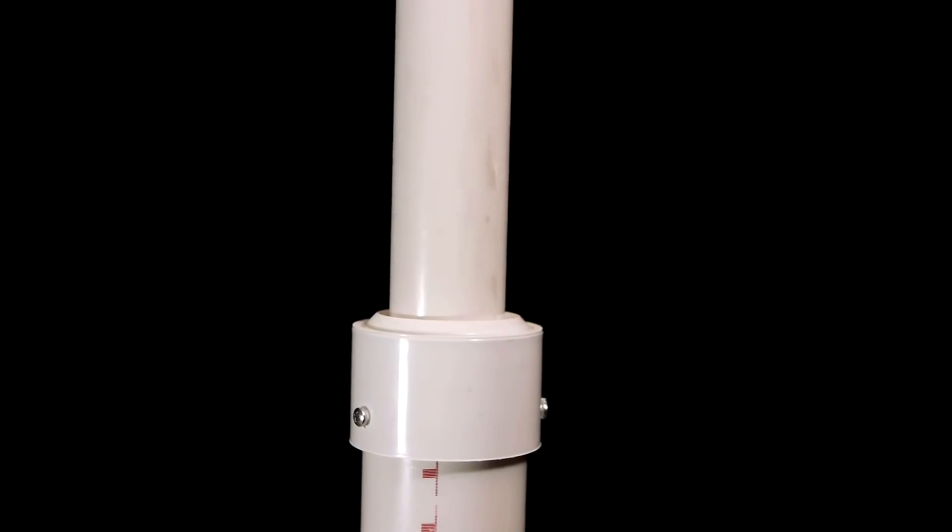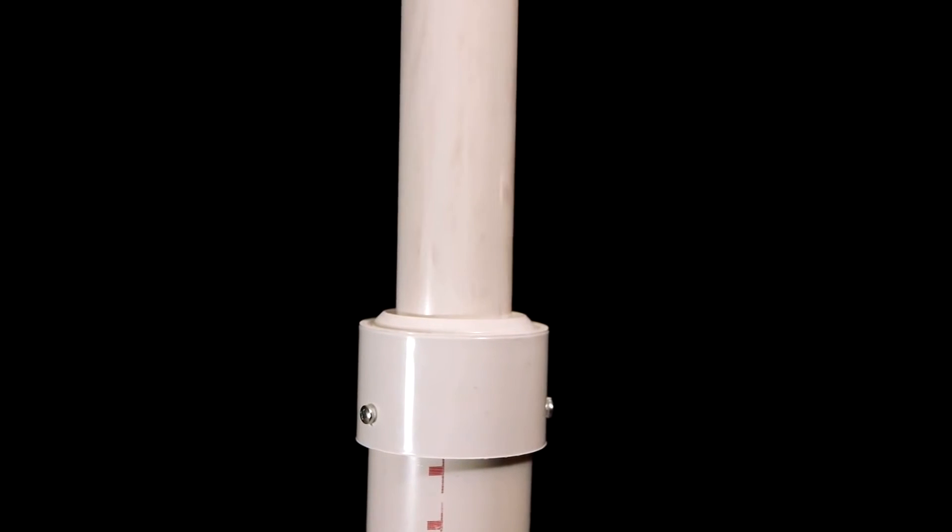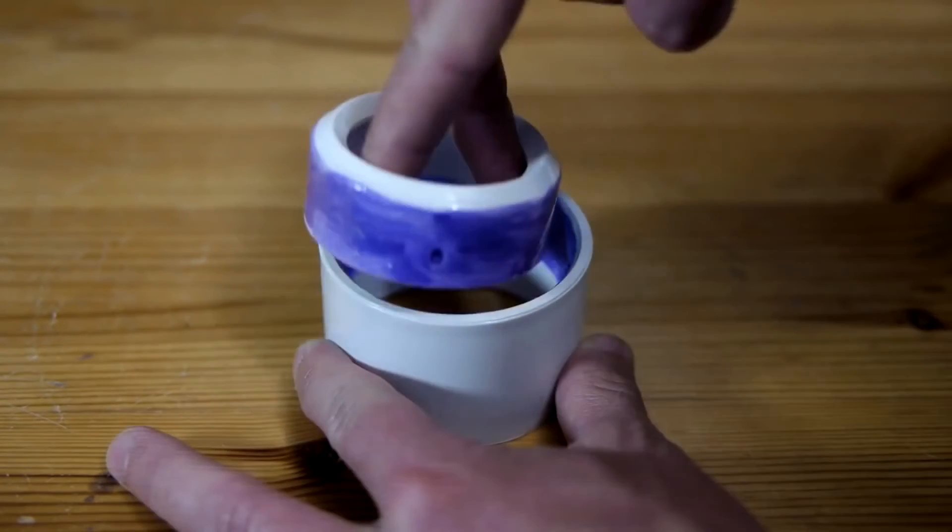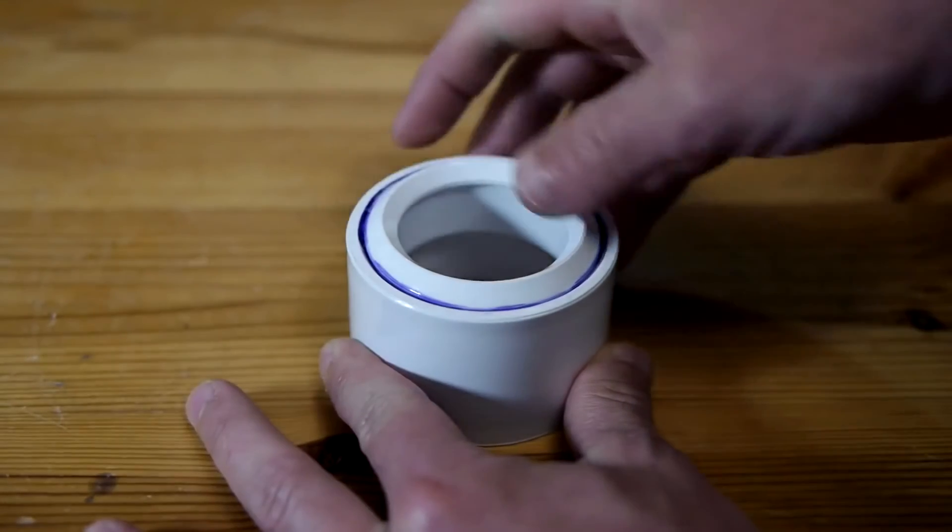Looking at the finished pump, there is a section at the top that is there to prevent the piston from being pulled all the way out by accident. This part is made by gluing a one-and-a-half by two-inch reducer into a two-inch coupling.